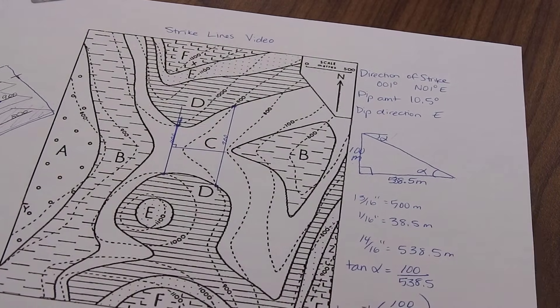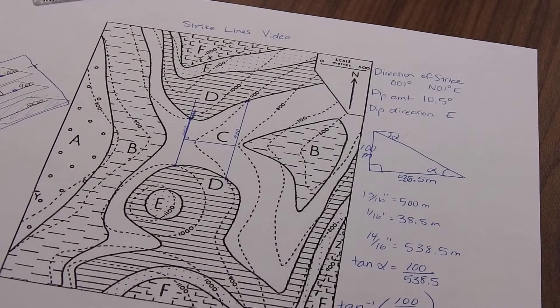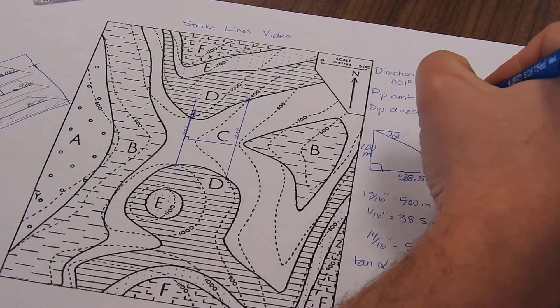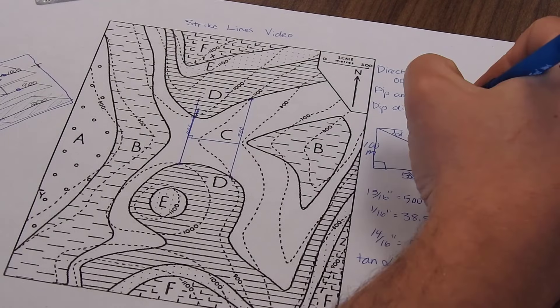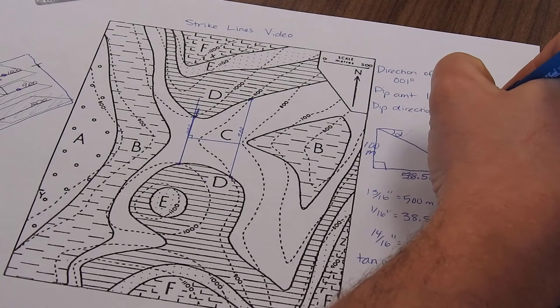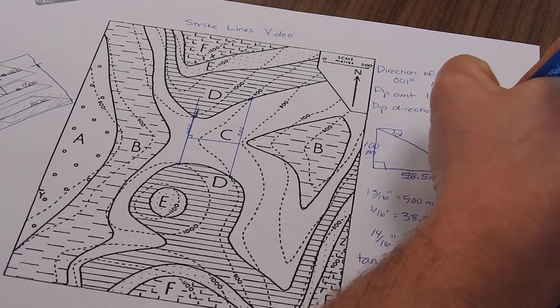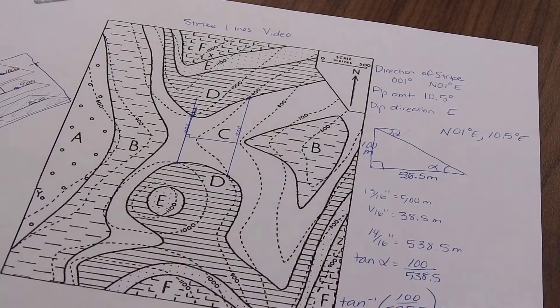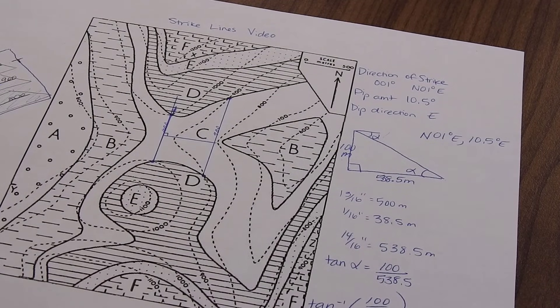So if you were asked for strike and dip of the contact between D and C, the way that you would write your answer, let's say you're using quadrant notation, would be north, O1, east, 10.5 degrees east. So that would be your final answer on this one.